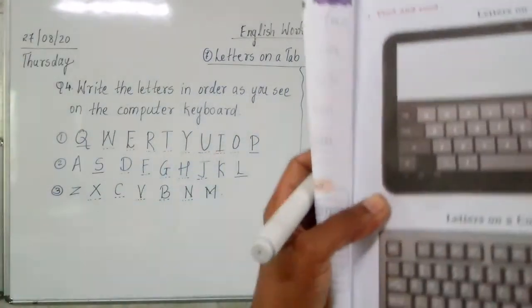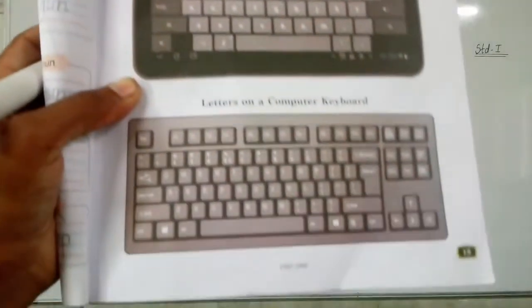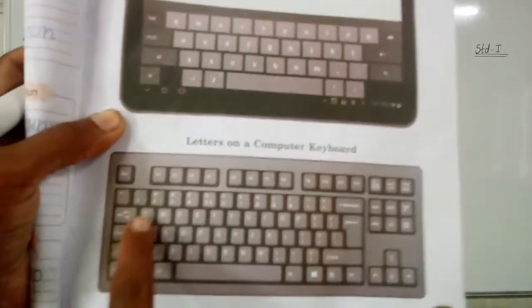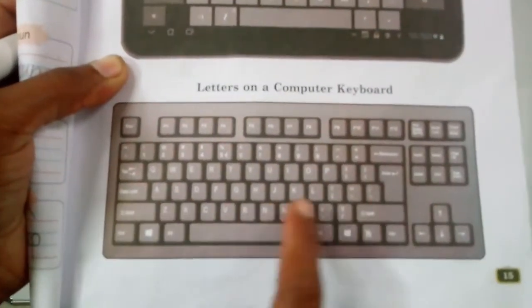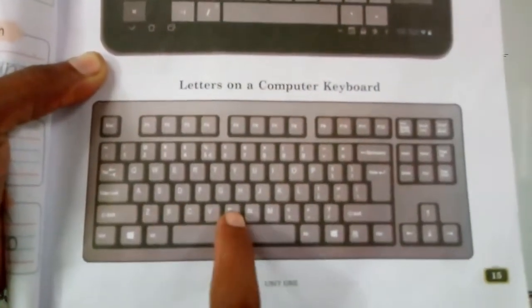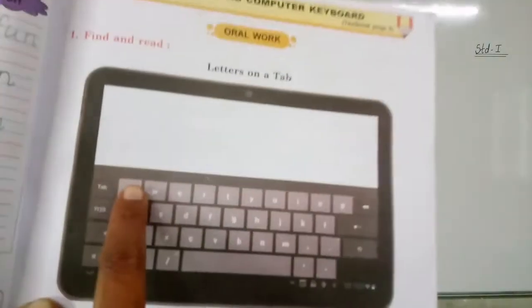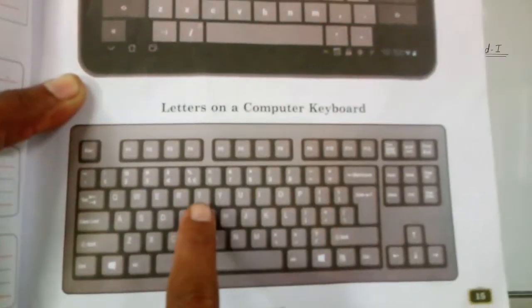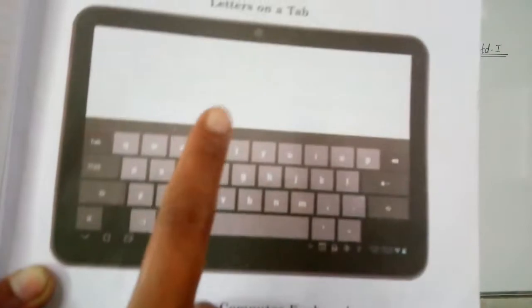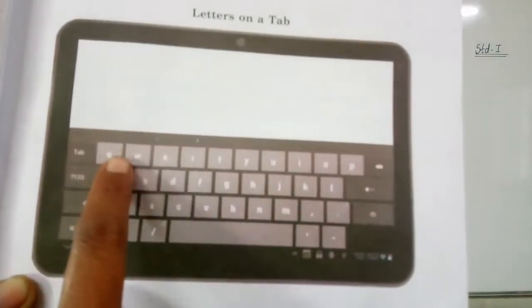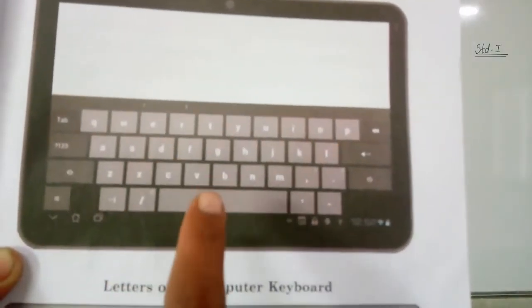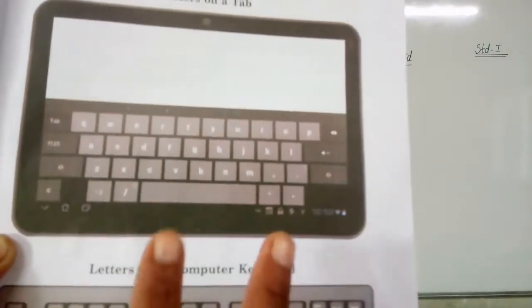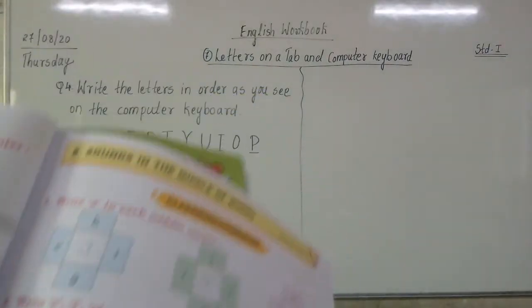Can you see? It is there in the book. There are three rows of letters on the computer keyboard. Also, here there are small letters on the tab, and here there are capital letters on the computer keyboard. On the tab, the letters are small. In this way we have completed Question number 4.